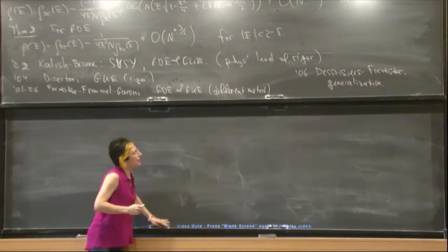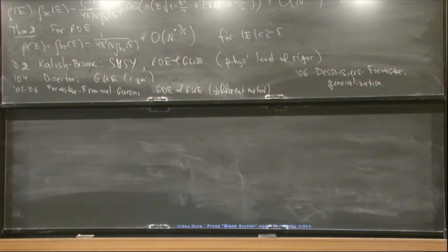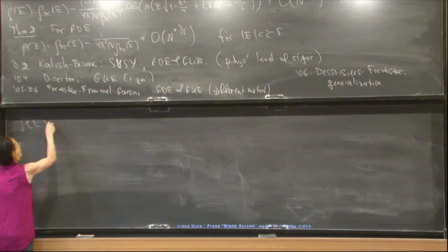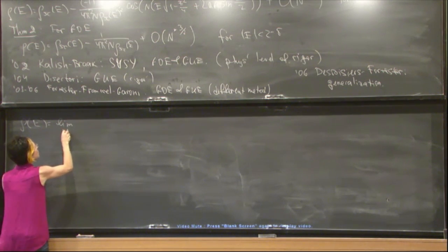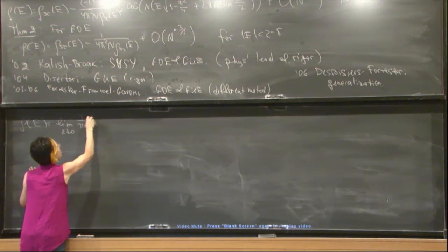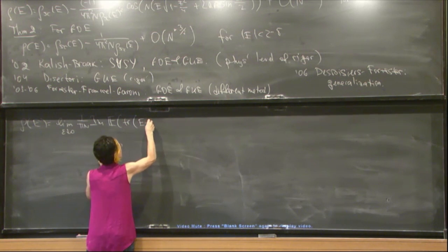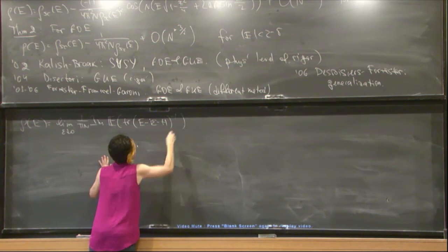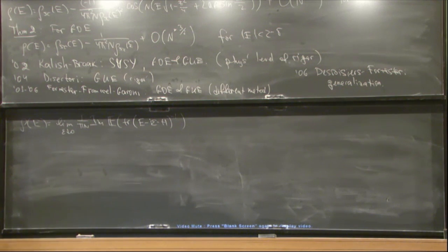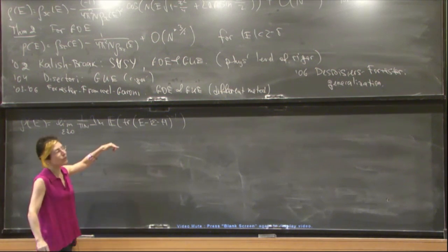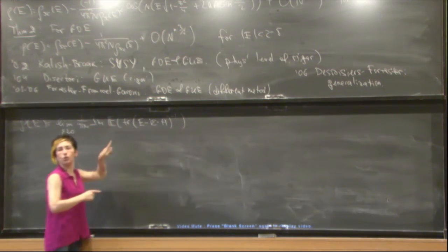There is an elementary formula that connects the density of states and the resolvent operator, which is true for any nice operator. The density of states equals the limit when ε goes to 0 of 1 over πn imaginary part of the expectation of the trace of the inverse of E minus iε minus H, H being our operator. We derive, using supersymmetric formula, an exact integral formula for that creature, for the expectation of the trace.